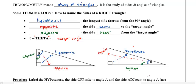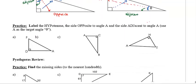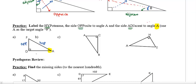Here's your goal: I want you to quickly practice labeling the hypotenuse, the opposite, and the adjacent. Notice I've capitalized the first three letters, because you don't want to write the whole word every time. In this case, make sure you're using A as the target angle. I'll quickly show you the first one: if A is the target angle — hypotenuse, opposite, adjacent.